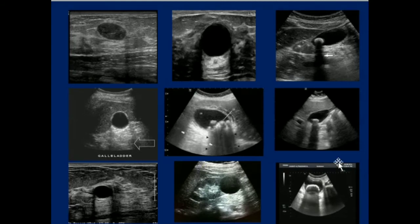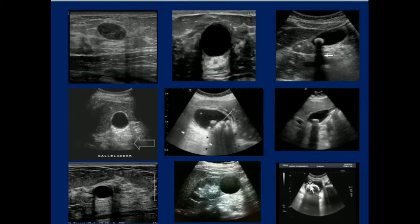Now moving to posterior shadowing. In this image there is a stone lying within the lumen of the gallbladder, and this is causing posterior shadowing. Another stone also causes posterior shadowing. This is the urinary bladder containing a large stone, and it is also showing posterior shadowing.